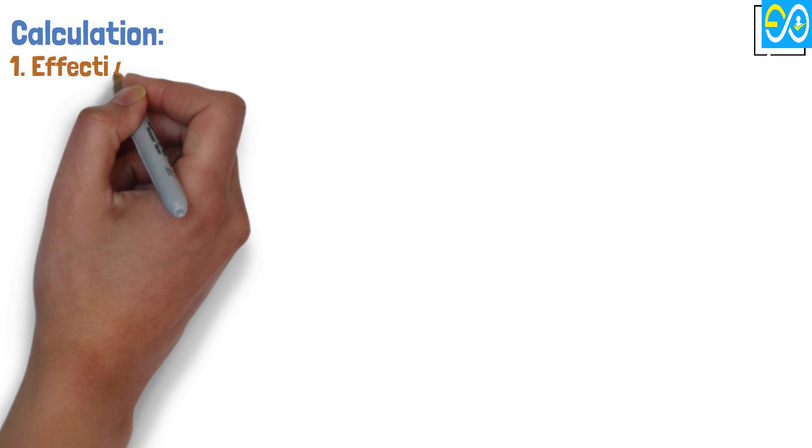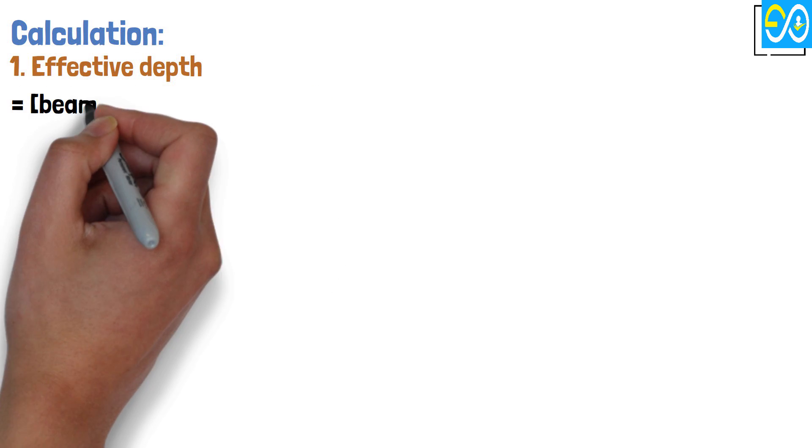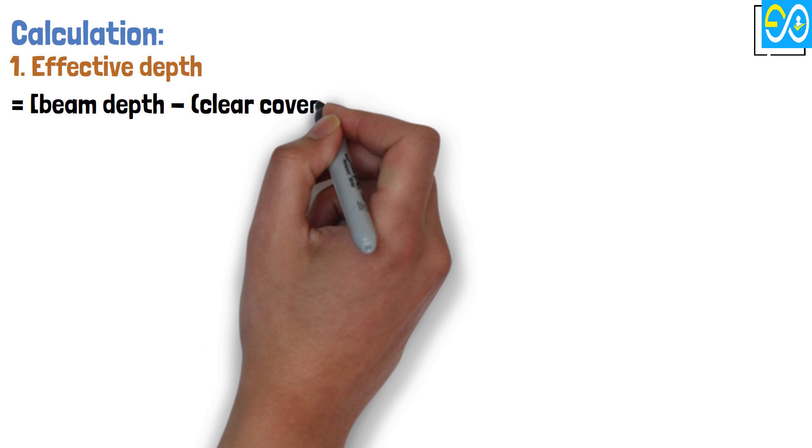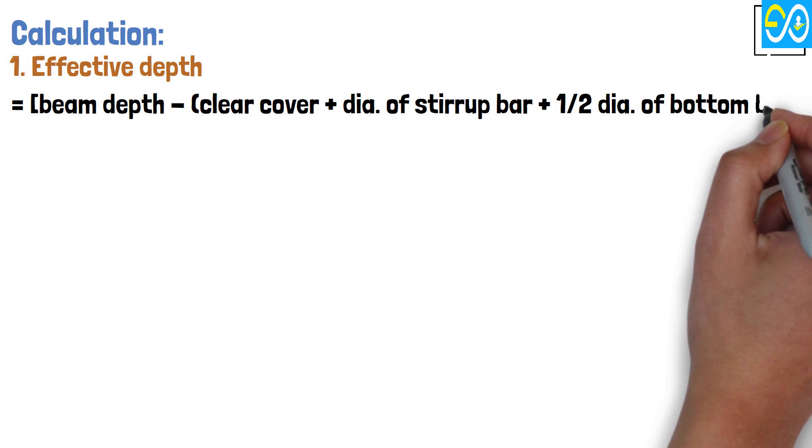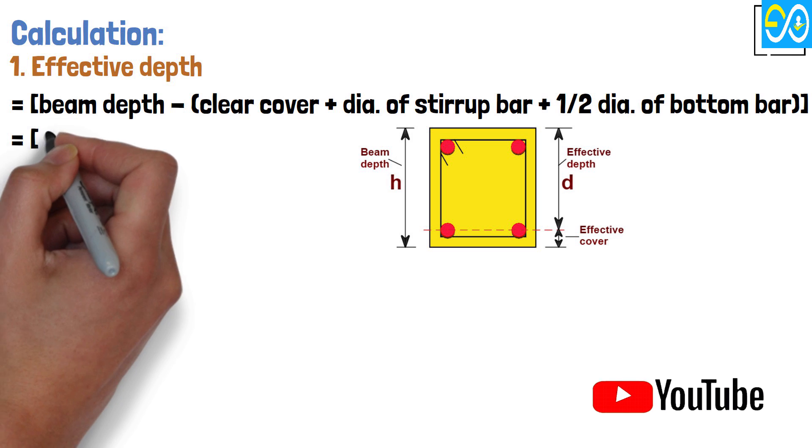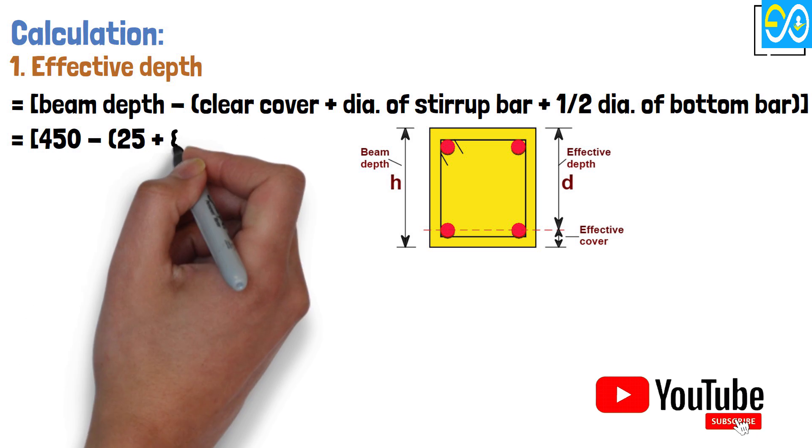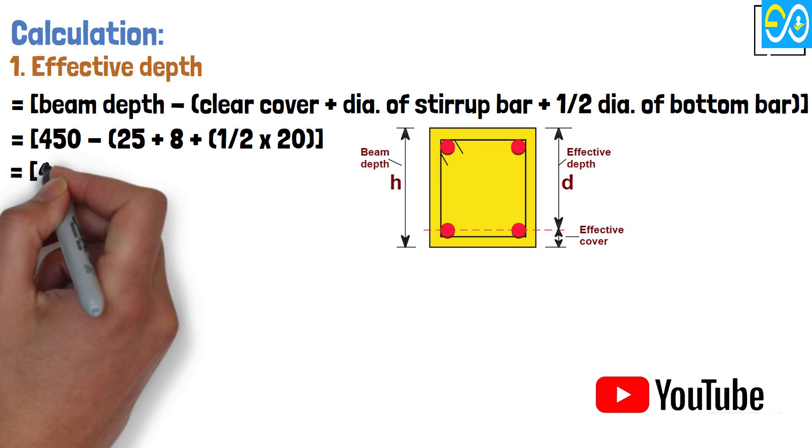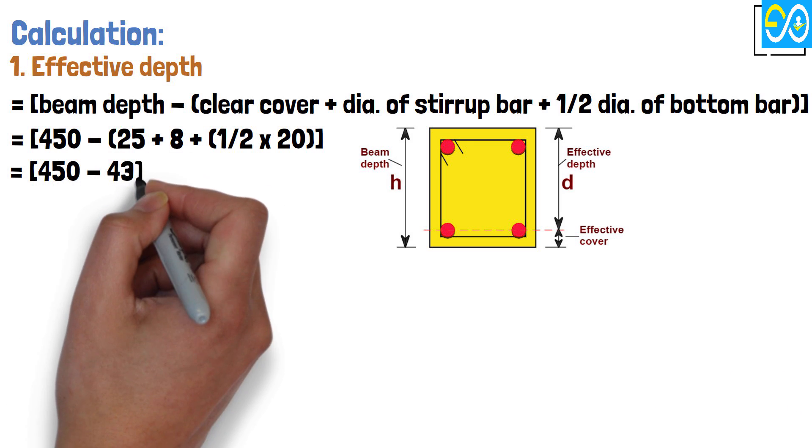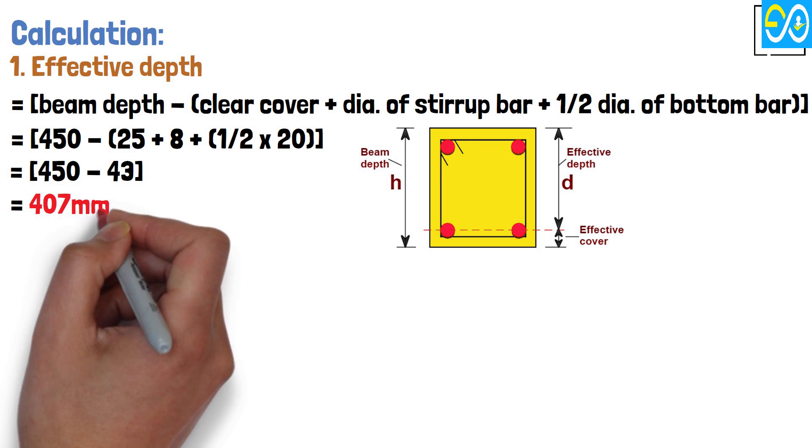Calculation 1. Effective depth. Effective depth equals beam depth minus clear cover plus diameter of stirrup bar plus half diameter of bottom bar equals 450 minus 25 plus 8 plus half times 20 equals 450 minus 43 equals 407 mm.